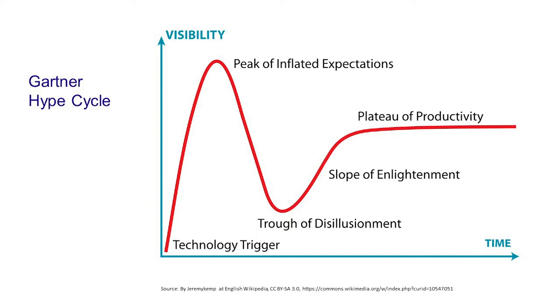As people start to use the technology and find out what its limitations are, the expectation goes right down and you get a trough of disillusionment. What generally happens then is that people find the niche of that technology — what it does really well — and you go up the slope of enlightenment, eventually reaching a plateau of productivity. Massive open online courses are a very good example of that.